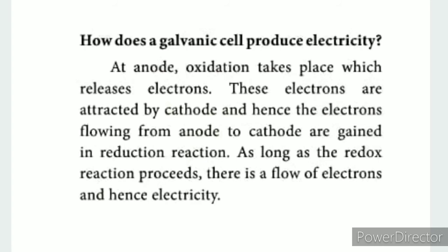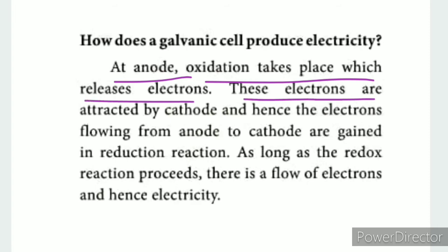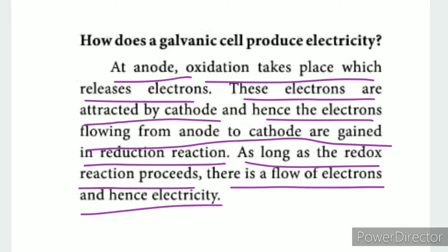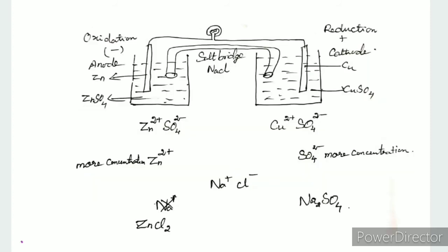How does a galvanic cell produce electricity? At the anode, oxidation takes place which releases electrons. These electrons are attracted by the cathode and flow from anode to cathode, where they are gained in a reduction reaction. As long as the redox reaction proceeds, there is a flow of electrons and hence electricity.